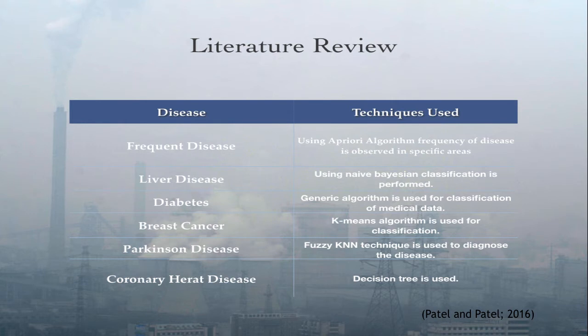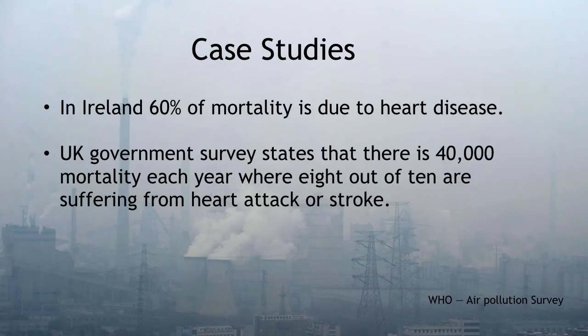In the literature review, past work is described. Frequent disease prediction is performed using the Osprey algorithm. Liver disease classification uses nerve-based classification. For diabetics, a genetic algorithm is used for classification. For breast cancer, K-means algorithm is used. For Parkinson's disease, fuzzy KNN technique is used to diagnose the disease. For coronary heart disease, a decision tree is used.